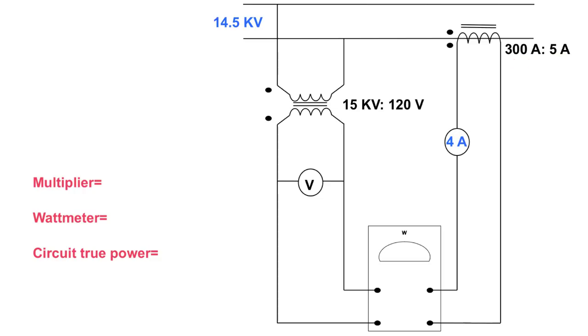Now PTs, or potential transformers, always have a ratio of something to 120 or 110 or 115, whereas CTs, current transformers, always have a ratio of something to 5 amps. So that way you know that on the secondary side, which is this side, that if I was reading 5 amps, I'd be reading 300 amps on the top side.